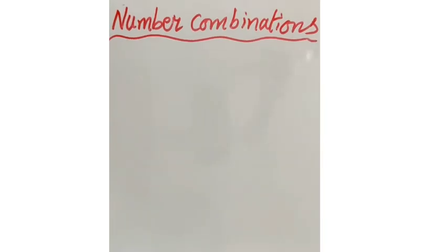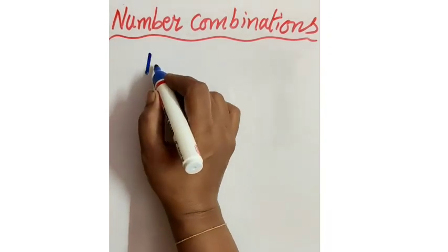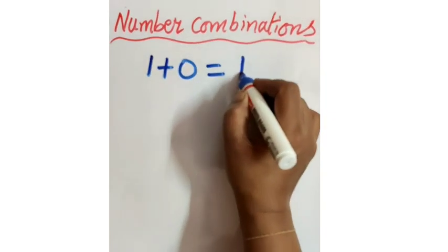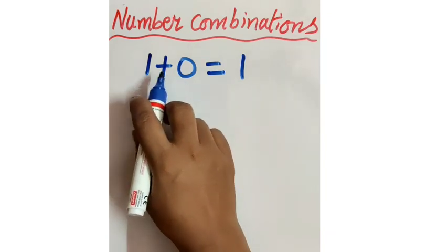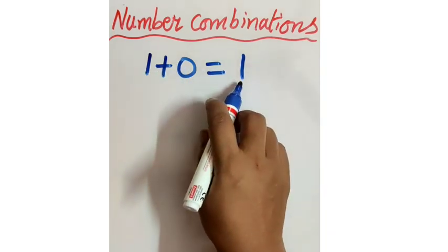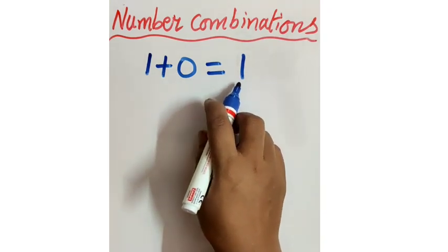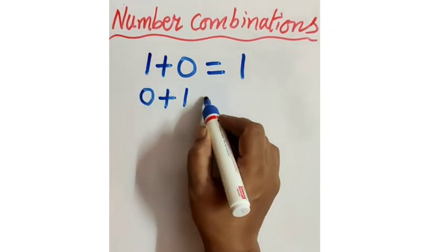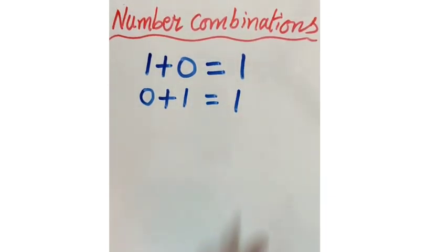Now let us make combinations of 1. See here: 1 plus 0 equal to 1. This is an addition fact. Do you remember that? Addition fact — if we add 0 to any number, we get the same number. So 1 plus 0 equal to 1. Or if we interchange their places, 0 plus 1 equal to 1. This is the combination for 1.